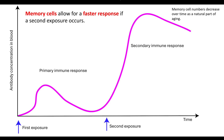The secondary immune response means we have this increase in our antibody concentration in our blood and we are able to fight the pathogen off faster.